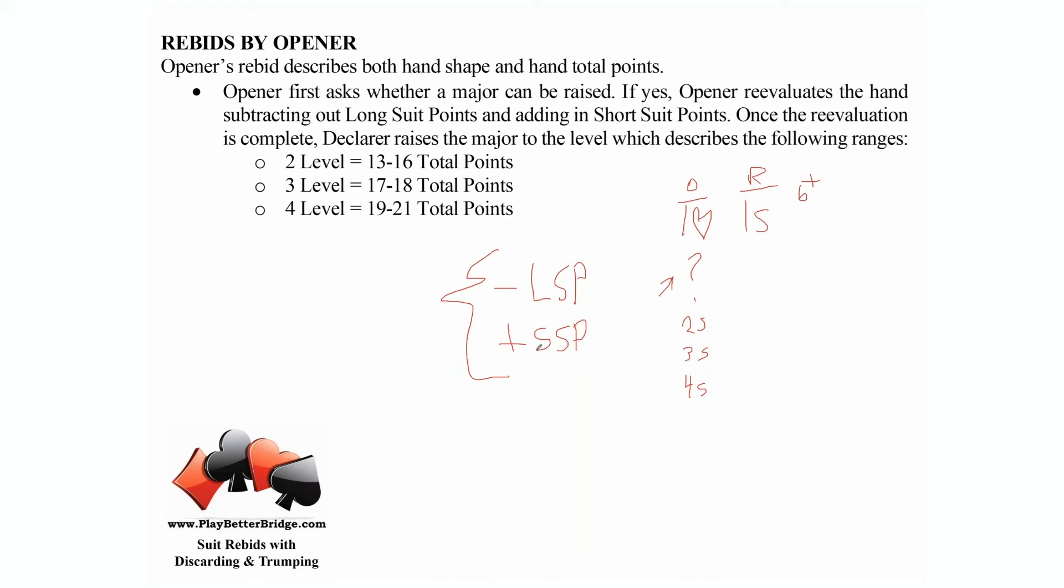If opener is rebidding their own suit, rebidding a second suit, or rebidding no trump, they're going to keep their long suit points and high card points.